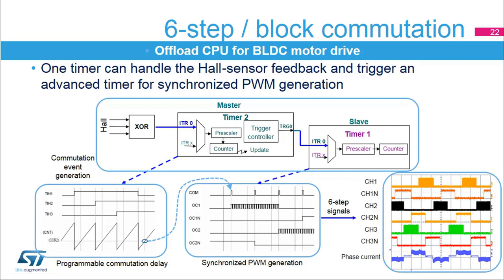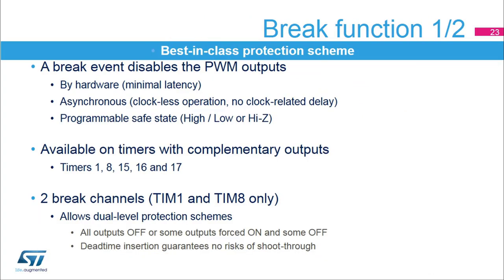These events serve as commutation events and trigger changes for PWM generation. For each of the six steps of the sequence, the states of the six outputs are defined to be either forced active or inactive, or generating a PWM signal. The transition from one step to the other is preloaded by software in the commutation interrupt routine and automatically transferred by hardware to reprogram the output operating mode when the next commutation arrives. The figure at right shows the six PWM signals for two consecutive complete six-step sequences, together with the current in one of the motor phases.